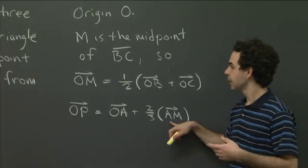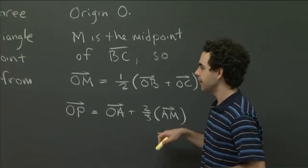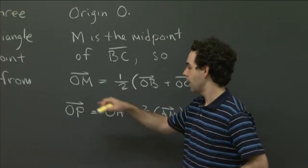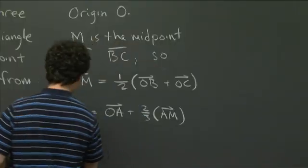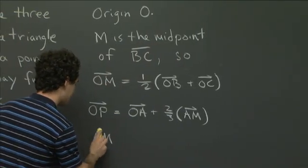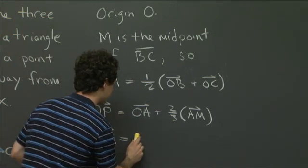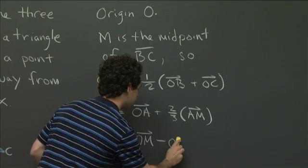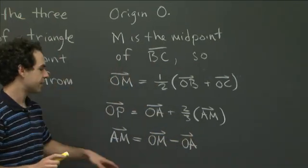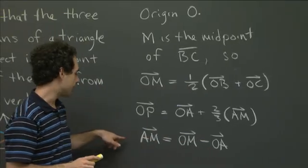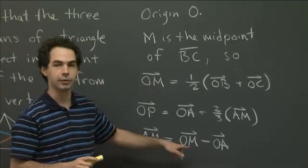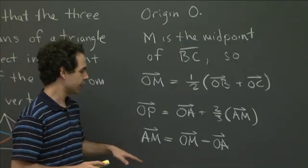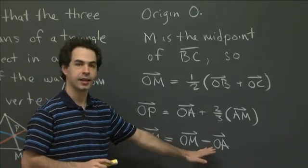Now we need the vector AM. We know what the position vector of A is, it's just OA, and we also know what the position vector of M is, it's OM. So that means that AM is just the difference of those two vectors. It's going to be OM minus OA. Another way to say this is that if you add OA to both sides, you have that OA + AM equals OM. In other words, to go from O to M, first you can go from O to A and then go from A to M. I've just subtracted OA onto the other side here.